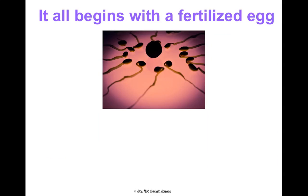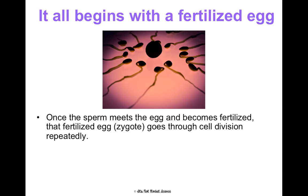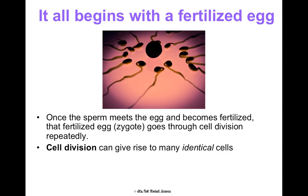It all begins with a fertilized egg. Here's an egg and a bunch of sperm — that's honestly what it looks like. Once that egg gets fertilized, we have a fertilized egg called a zygote, and it's going to go through cell division repeatedly. It's going to copy itself over and over again, giving rise to many identical cells. You're just this ball of identical cells starting off.